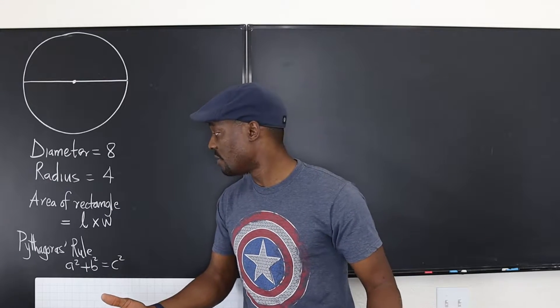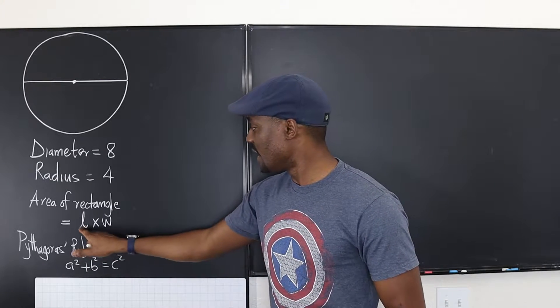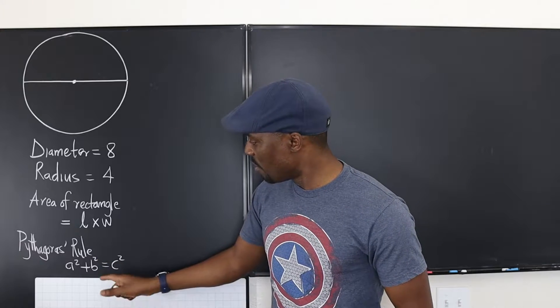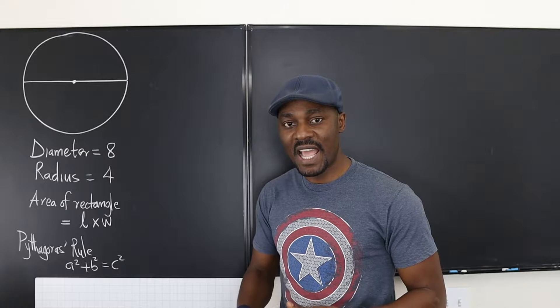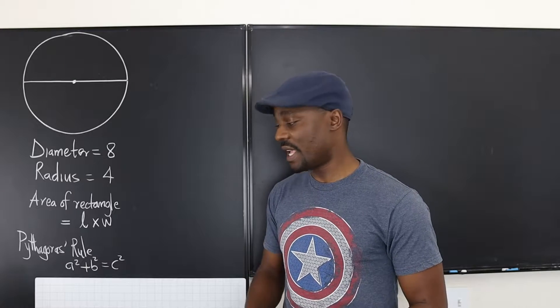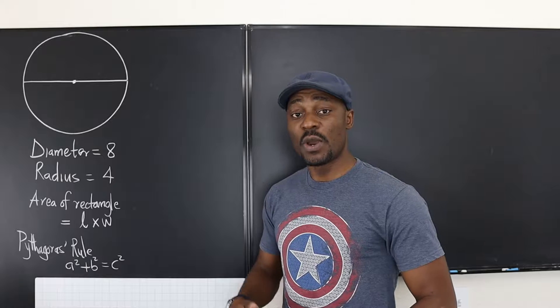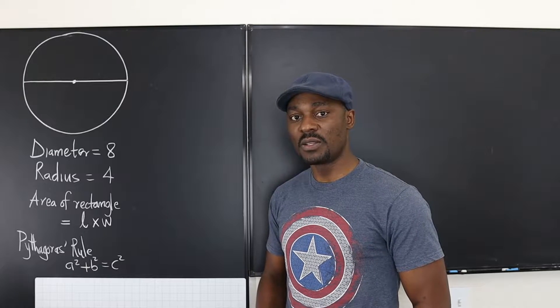We know the formula of the area of a rectangle is the length multiplied by the width. And we're going to be borrowing Pythagoras rule, which is the sum of the squares of the legs will be equal to the square of the longest side, which is the hypotenuse.